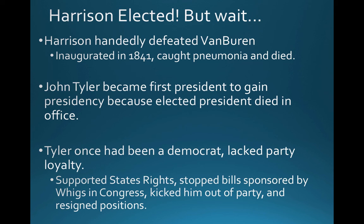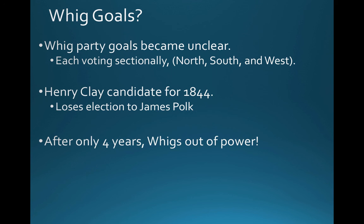There was major tension between the Whig party and President John Tyler. The Whigs had seen a meteoric rise in gaining the presidency in a very short time as a new party, but with Tyler their goals became unclear. Whigs started voting sectionally rather than with party unity — differences between northern, southern, and western Whigs. They ran Henry Clay as their candidate in 1844, but he lost to James K. Polk. After only four years with access to the presidency, the Whigs were out of power just like that. That concludes this review of the Jacksonian era and his influence on American politics and American expansion.